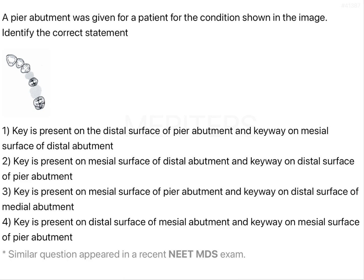A pier abutment was given for a patient for the condition shown in the image — identify the correct statement. This question is about pier abutment. In the image, the first premolar and first molar are missing, and the second premolar has edentulous spaces present mesial and distal to it. So the second premolar is your pier abutment — an abutment with edentulous spaces on both sides.